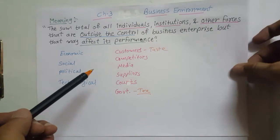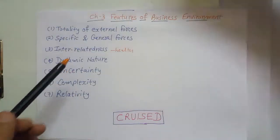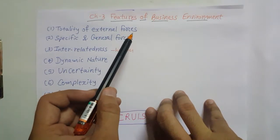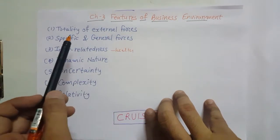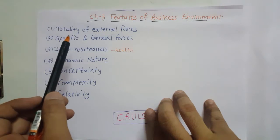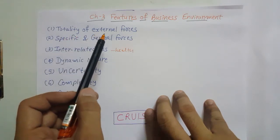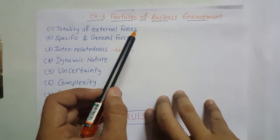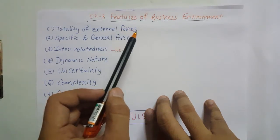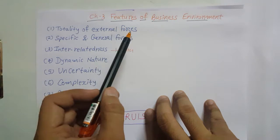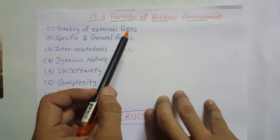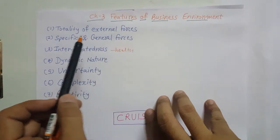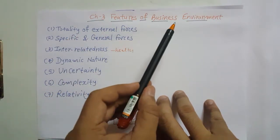Let's understand its features. The first one is totality of external forces, as seen in the definition. Business environment means the totality of all external forces not in control of the business — including customers, suppliers, government, economic forces, social environment, political environment — and all this environment together is called business environment.